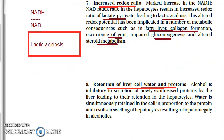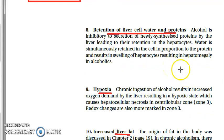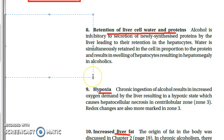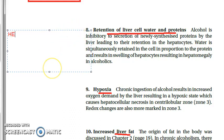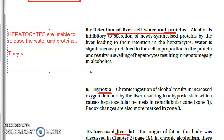Eighth point: retention of liver cell water and proteins. Alcohol inhibits the secretion of newly synthesized proteins by the liver, so proteins cannot leave the hepatocytes. Water is continuously retained along with protein, causing swelling of hepatocytes and ultimately hepatomegaly — the liver itself enlarges.